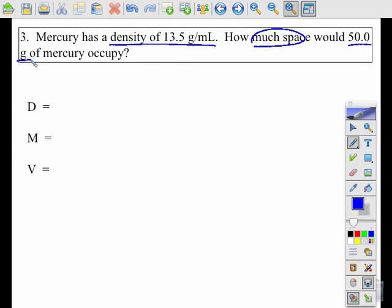This one's a little trickier. Let's write our notes first. So it says right in the problem, the density is 13.5 grams per milliliter. I'm going to skip the part that I circled, which is how much space, and skip to 50 grams. Now it doesn't say mass, but I know a gram is a unit of mass. So 50 grams goes with the M.